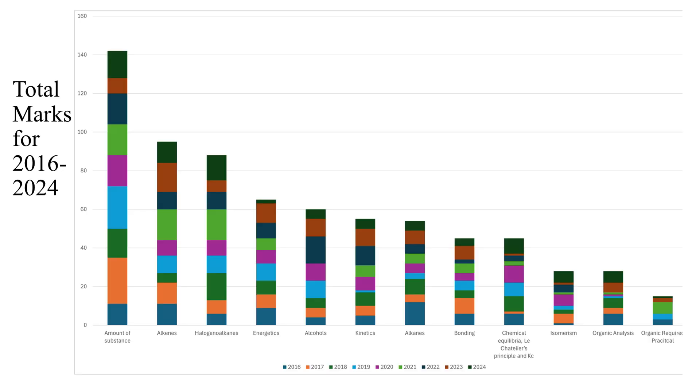This graph is showing both the total marks across those nine papers for each of the different topics, but it's also showing how many marks have been available each year. And when we look at that of course we see that amount of substance is still the most important topic. It's also one of the most consistent topics being consistently worth a high number of marks starting from 2016 which is the dark blue at the bottom and working our way up to the dark green at the top which was 2024.